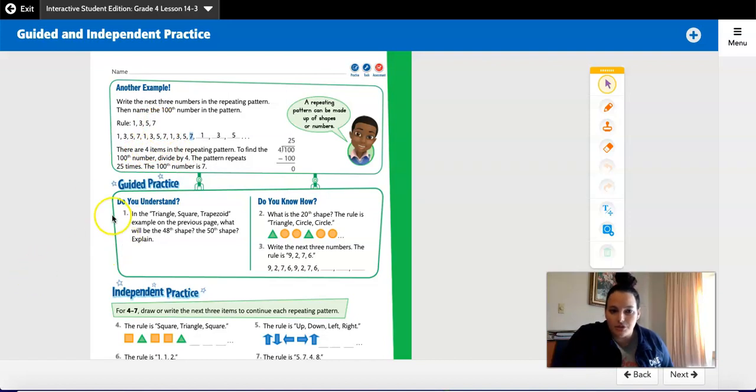So number 1 for do you understand is in the triangle square trapezoid example on the previous page, what will be the 48th shape? What will be the 50th shape? Explain your answer. Pause the video, work it out, and then come back to check your answer.